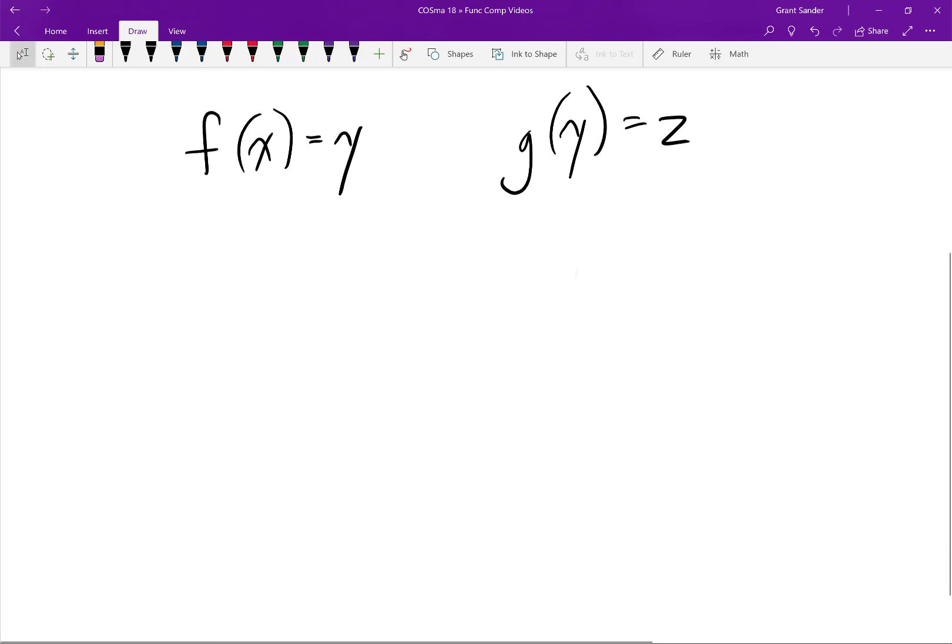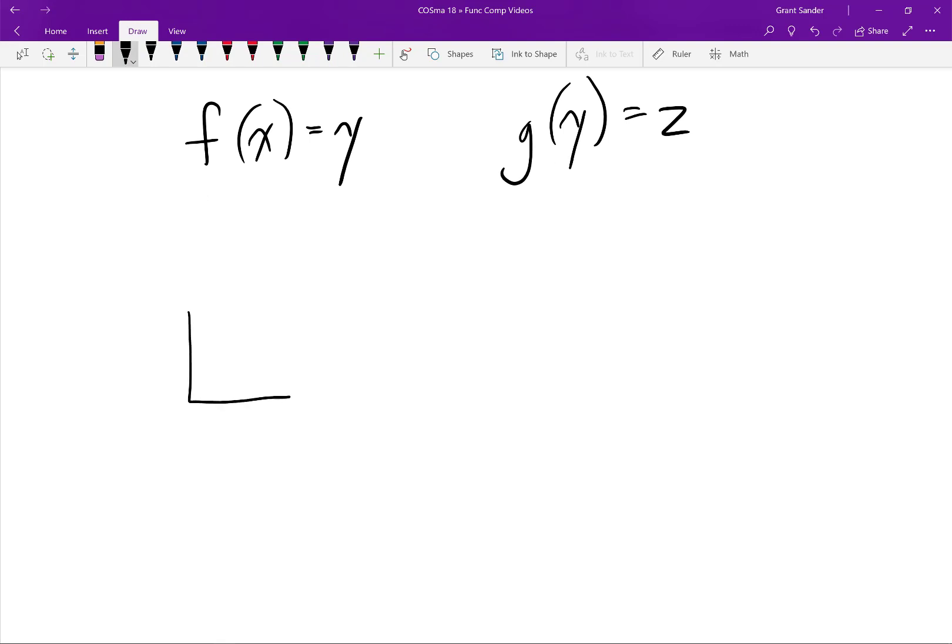We can represent these two functions using function machines. So we'll draw a function machine like this, which represents the function process f. And the function f takes a value of x as its input and then outputs a value of y.